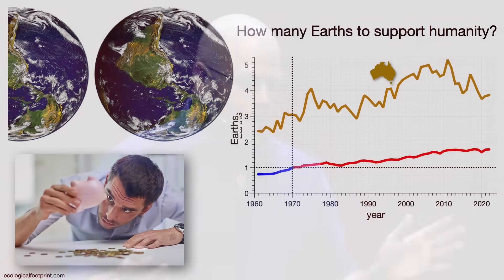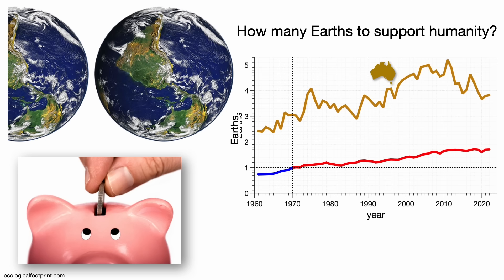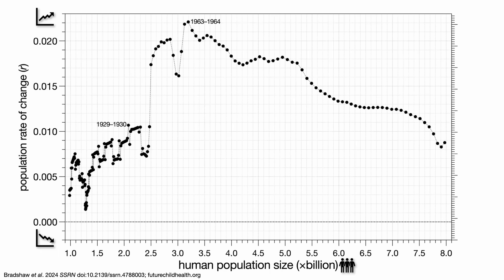We are using 1.7 Earths per annum now, globally. If everyone consumed like an Australian, it would be more like four. You can't use more than one Earth — there's only one. Think of it like this: let's say you have a bank account and you live off that balance. You can live quite comfortably, in fact. But if you end up taking out more than you put in every fortnight, you're eventually going to be bankrupt. And that's the trajectory we're on now. Back to some maths: let's take that population rate of change on the y-axis and population size on the x, and apply it to the human population trajectory since 1800. Every one of those dots is a transition between one year and the next.